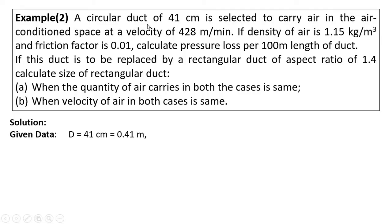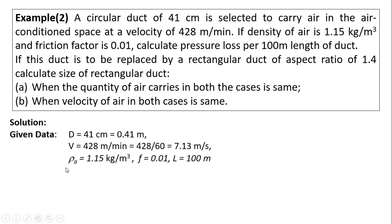Writing the given data: circular duct diameter D = 41 cm = 0.41 m. Velocity of air = 428 m/min; dividing by 60 gives V = 7.13 m/s. Density of air = 1.15 kg/m³. Friction factor f = 0.01. Length of duct = 100 m, and aspect ratio a/b = 1.4.